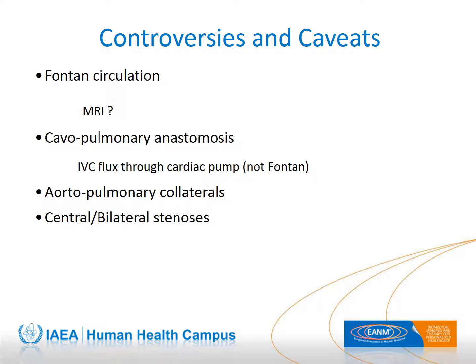Lung perfusion scintigraphy is a safe and robust method for evaluating symmetry and distribution of lung perfusion in children with congenital heart defects. It must be interpreted in conjunction with echocardiography to avoid errors in patients with main pulmonary artery stenosis or bilateral balanced stenosis. Even when magnetic resonance or angiocardiography is necessary, it represents a valuable resource for non-invasive monitoring.